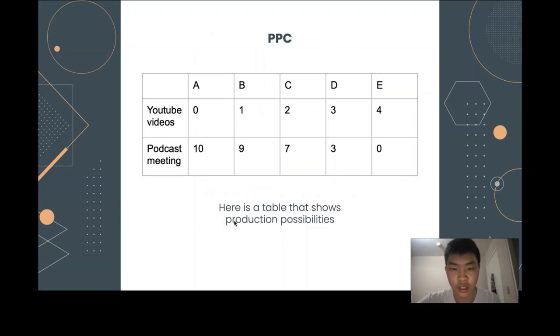We will start with the table that shows Production Possibility of two goods, which are YouTube Video and Podcast Discussion in this case. As shown in the chart, if a group of kids spend their time making YouTube videos, there will be no production of podcast discussion. And if they decided to use all their time on podcasts, there won't be any production of YouTube videos. This shows the different combination of video and discussion the group can be making using their time.